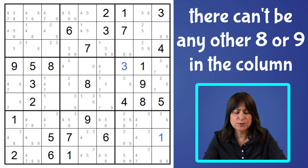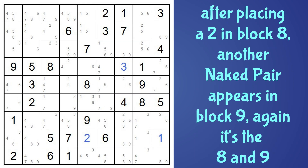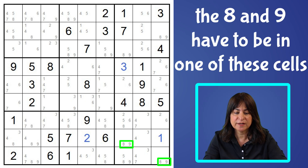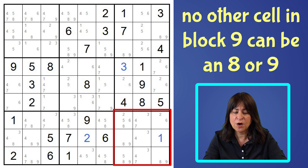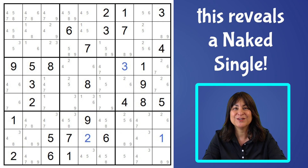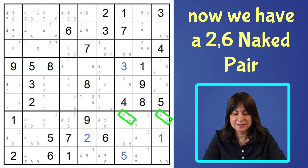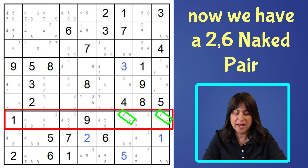That didn't help us place any numbers. Sometimes it does, sometimes it doesn't, but it helps move the puzzle along when you can eliminate some candidates. We can also see a naked pair in block nine — it's the same eight-nine pair, but in these two cells. Since the eight and nine have to be in one of those two cells in block nine, no other cell in the same block can be an eight or nine, so we can eliminate this eight and nine and also this eight. And look at that — we have a naked single here, the five, which means we can eliminate this five. Now we have a naked pair here — the two and the six in block nine — but also in the same row. So if there were any other twos or sixes in this row, we could eliminate them, but there are none.